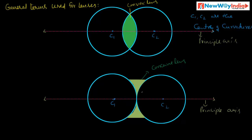Another important term is aperture. The aperture of a lens is the diameter of the lens through which refraction takes place. This is the diameter of the convex lens and this is the diameter of the concave lens — this line is called the aperture of the lens.